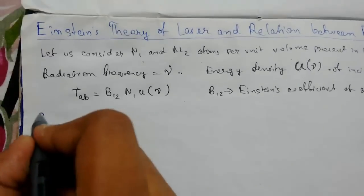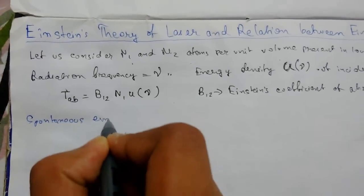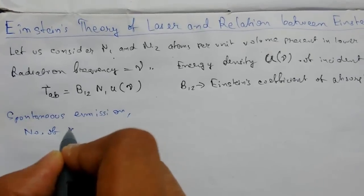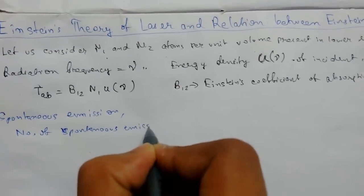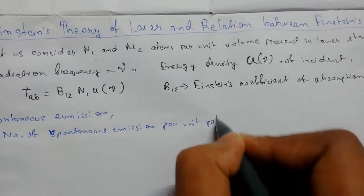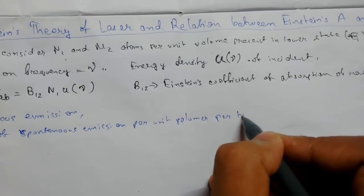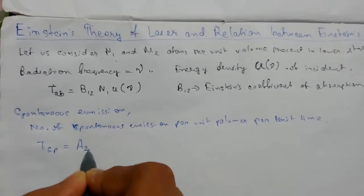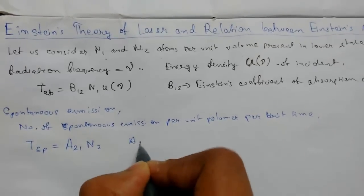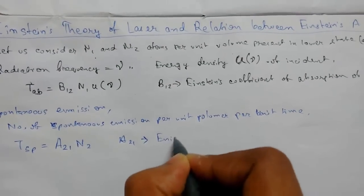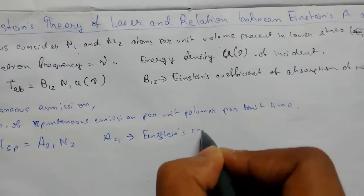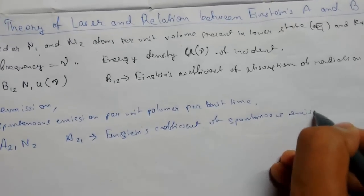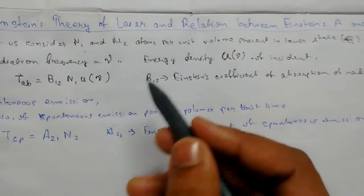The number of spontaneous emissions per unit volume per unit time, that is the rate of spontaneous emission, is given as T_SP = A21 * n2, where A21 is Einstein's coefficient of spontaneous emission. The subscript 21 represents the transition from the second (higher) state to the first (lower) state.